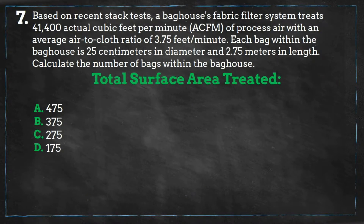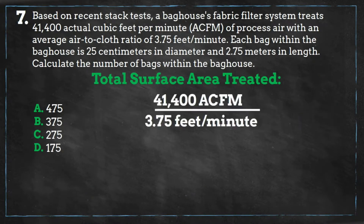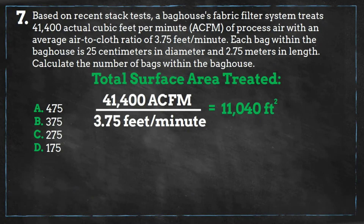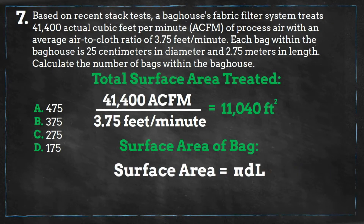The first thing you should do is find the total surface area treated. Take your flow rate and divide it by your velocity, and you'll get a surface area treated of 11,040 square feet.